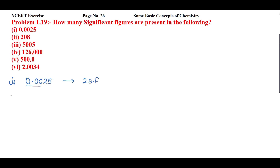Next is 208. Here we apply rule number two: zeros between two non-zero digits are significant. So this zero is also significant. According to rule number one, all non-zero numbers are significant. The zeros between significant figures are always significant. So how many significant figures are there? 1, 2, 3 — three significant figures.